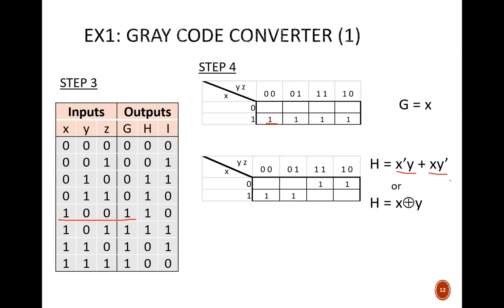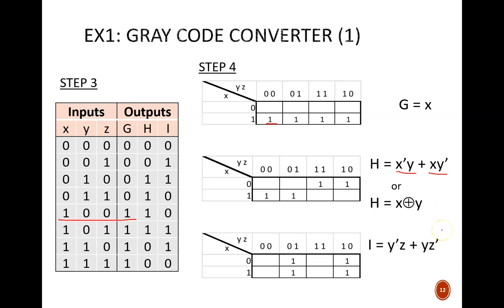And the final output variable is I. Pause the video and see if you can identify its equation. I hope you paid attention to H. We see the same pattern here for I, but now using y and z. The best equation to use is I equals y exclusive or z.